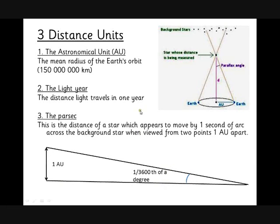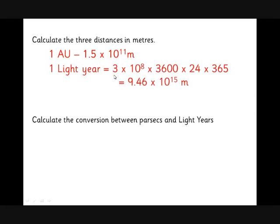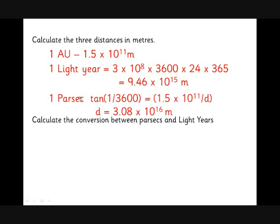We can do some conversions. An astronomical unit - we already did meters. A light year we do 3 times 10 to the 8 times 3600 times 24 times 365. If we just do a little bit of trigonometry on that triangle we just had, we end up with the distance of a parsec being this far. A little conversion factor between these two that we'll need quite a lot - a parsec is 3.26 light years.